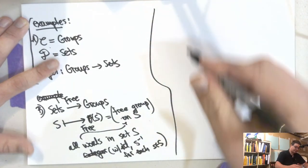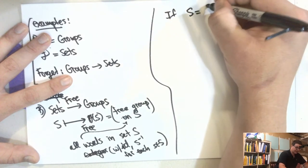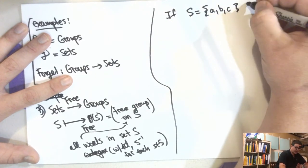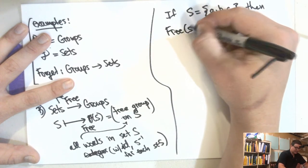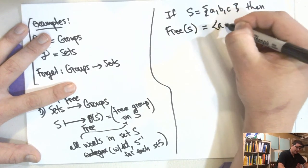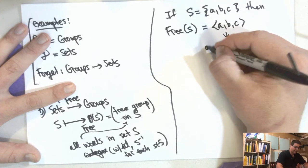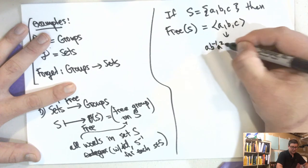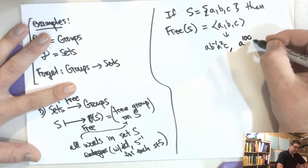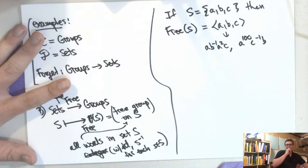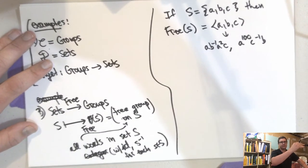For example, if S = {A, B, C}, the free group on S is the group generated by A, B, C. It contains elements like B⁻¹A²C, or A¹⁰⁰C⁻¹B — just all the words you can write down using A, B, and C.